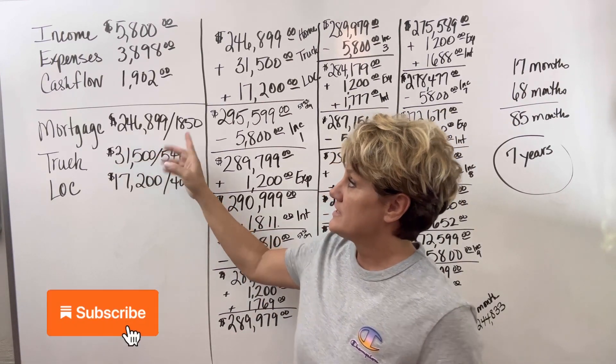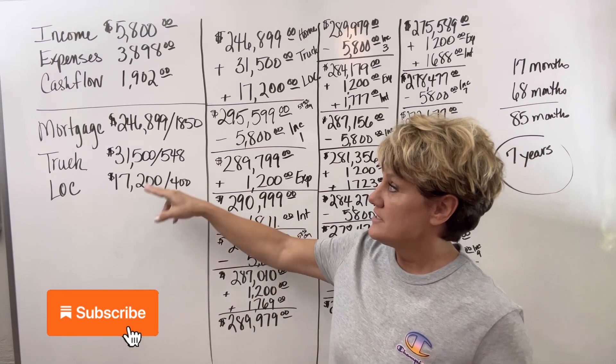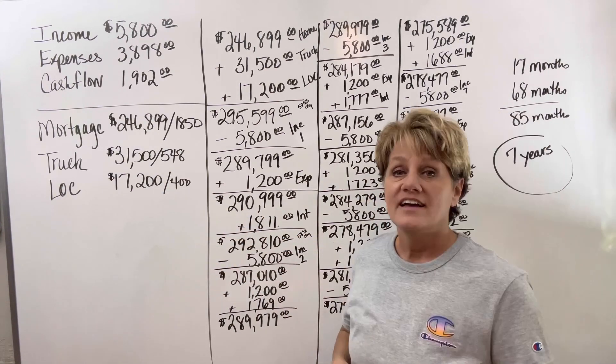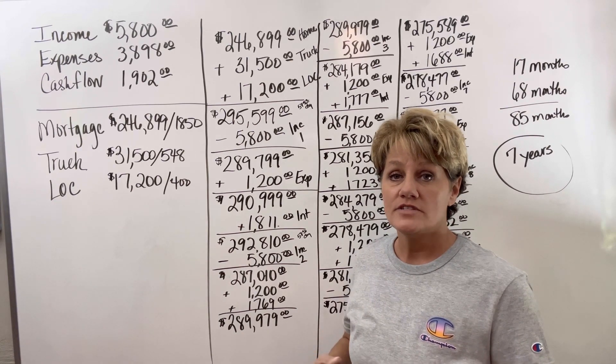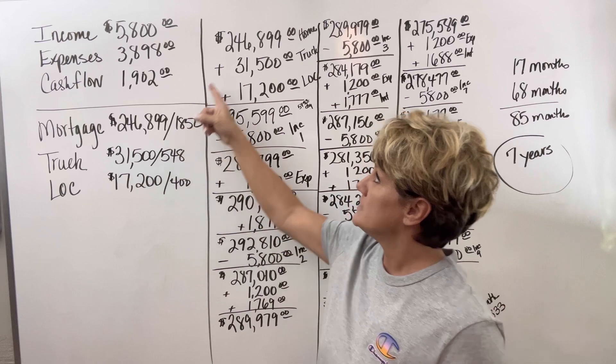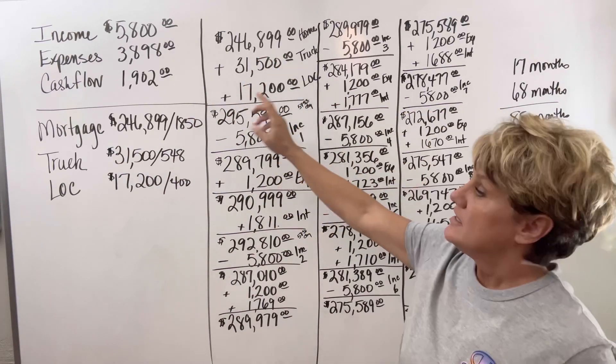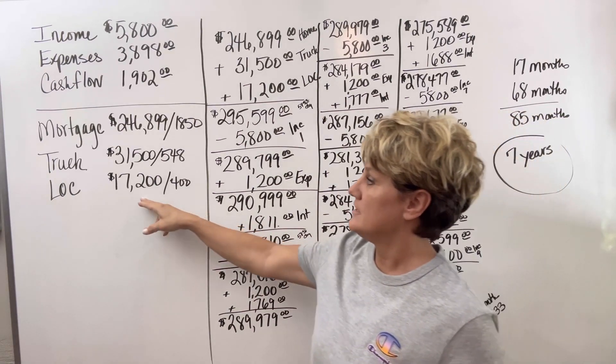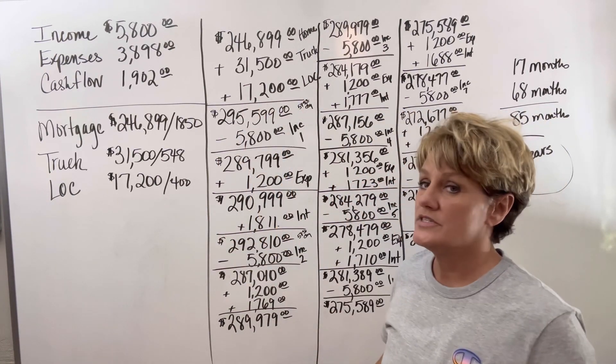The mortgage is $246,899. The truck is at $3,155 and he has a LOC that is $17,200. In the event that he obtains a first lien HELOC, he will engulf this mortgage of $246,899. He can take the $31,500 balance on the truck and the $17,200 balance on the LOC.